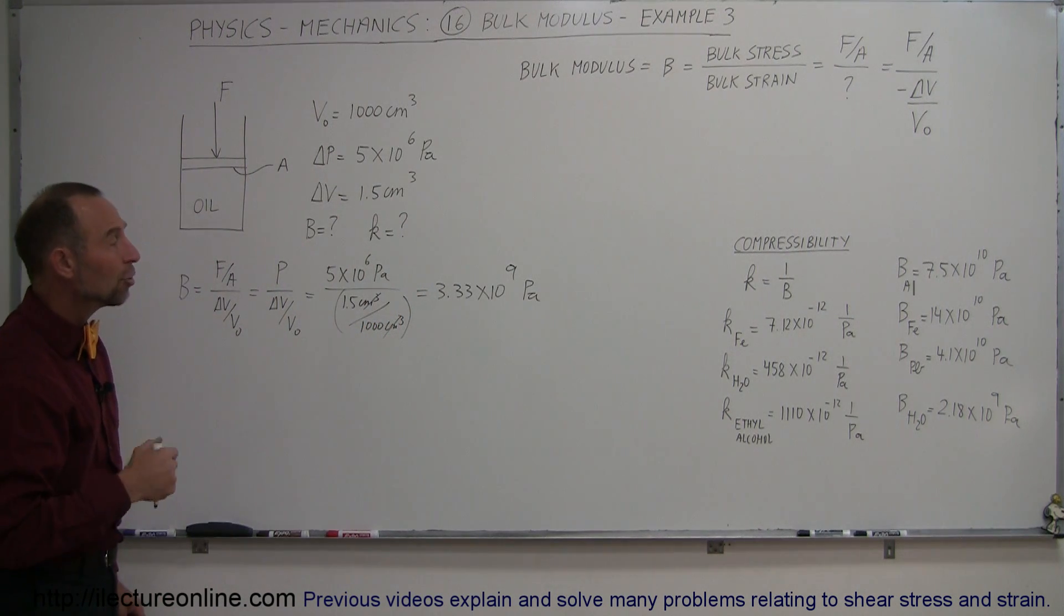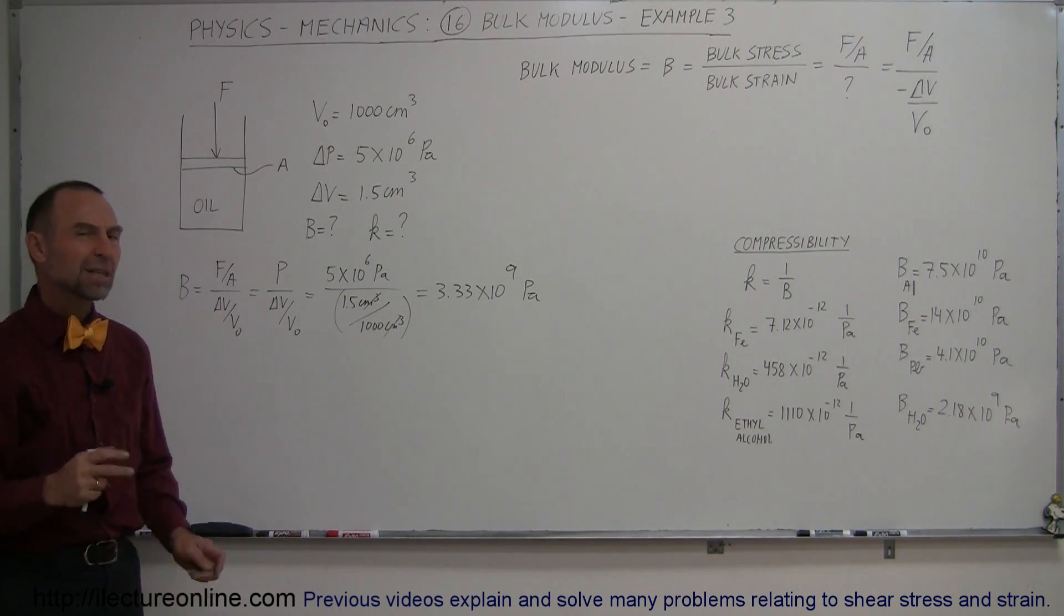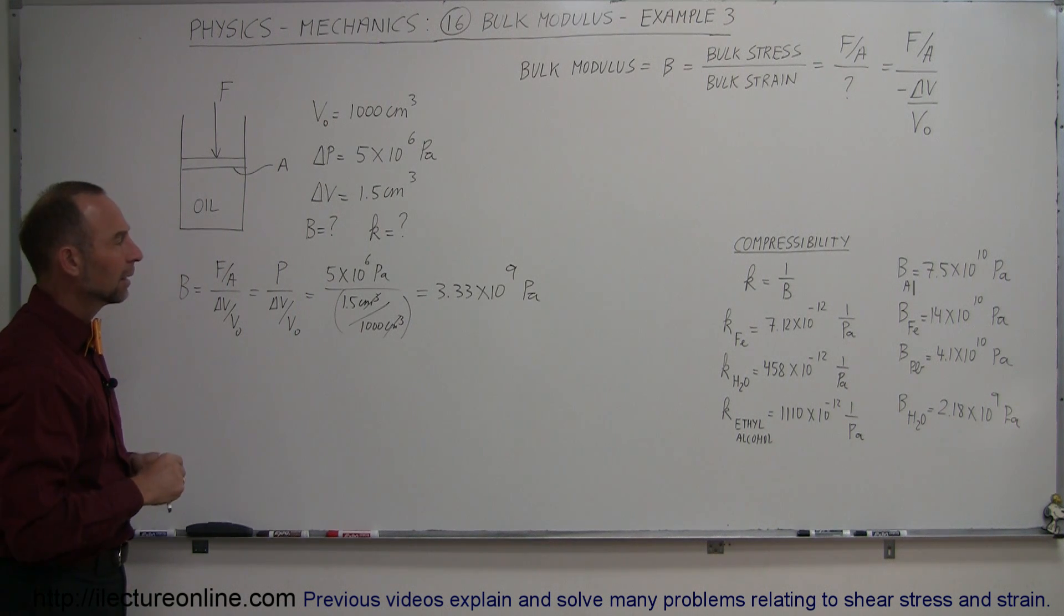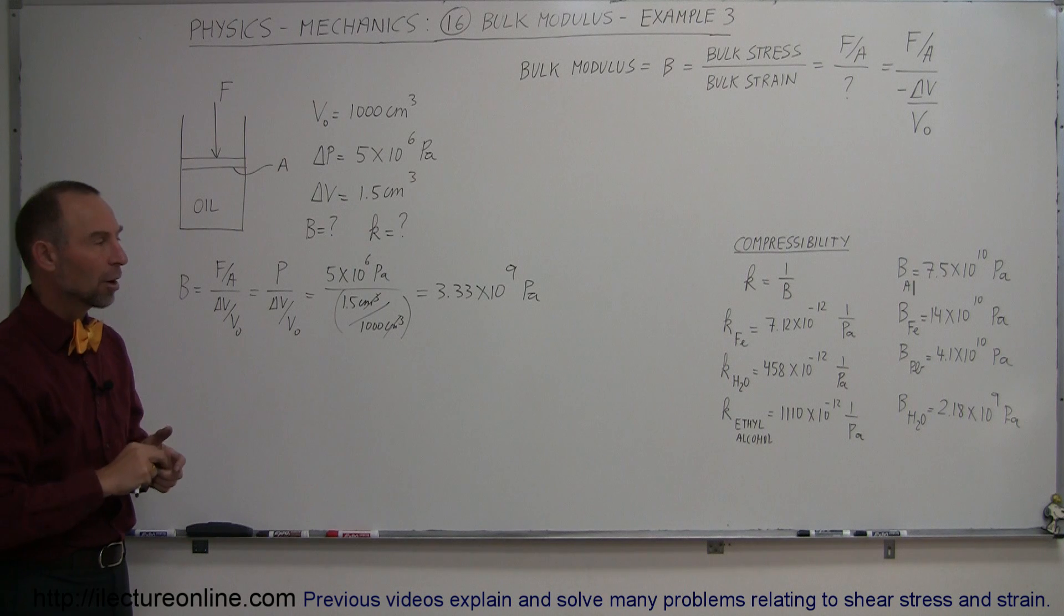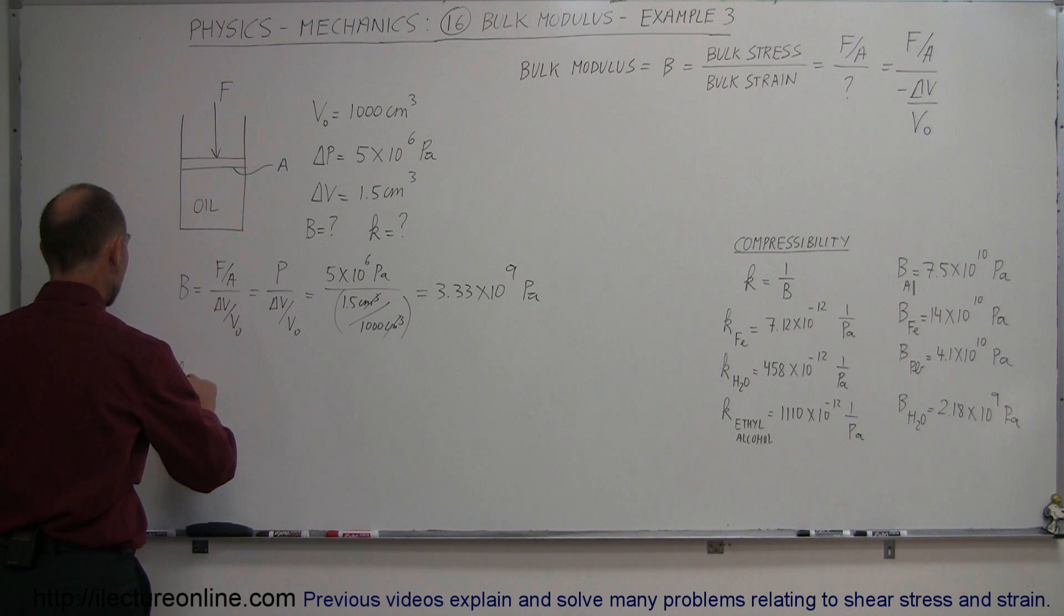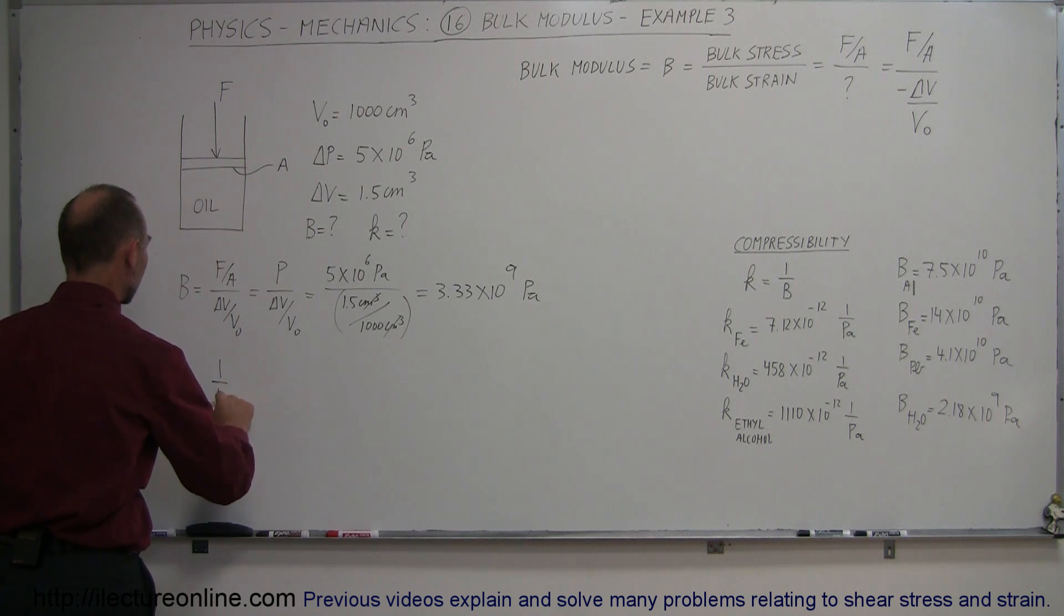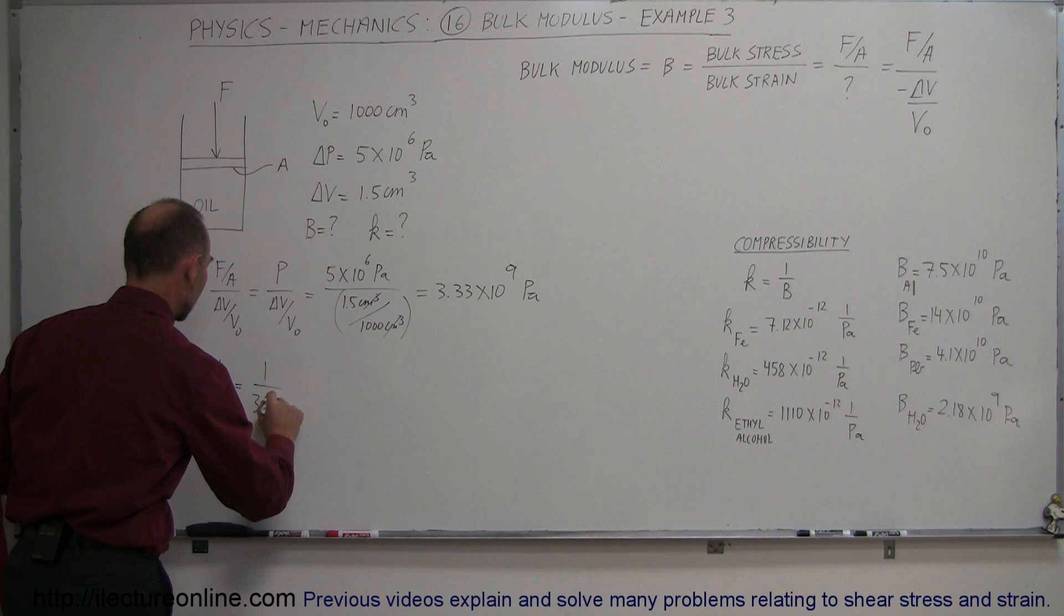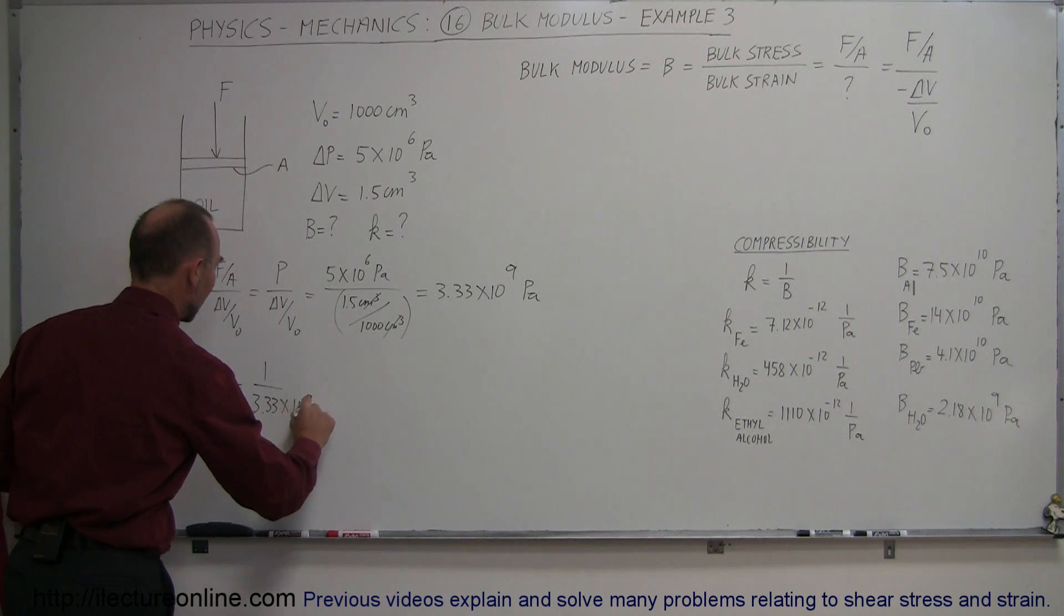So it's a little bit higher number than water, which would mean that this oil would be less compressible than water because it has a higher bulk modulus, more pressure required for the same volume change. The compressibility k is equal to 1 over the bulk modulus, that would be 1 over 3.33 times 10 to the 9th pascals.